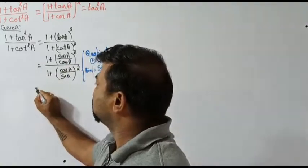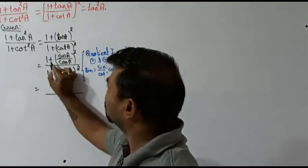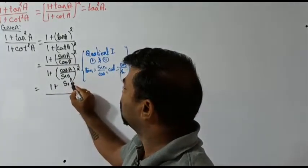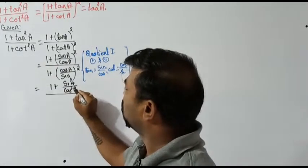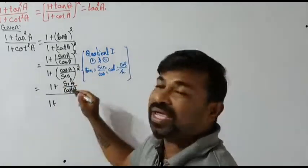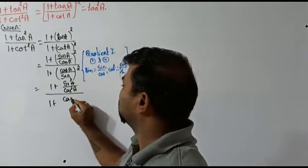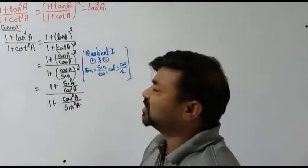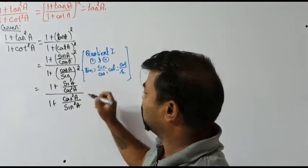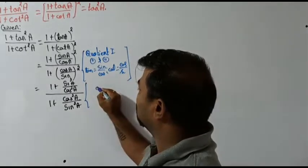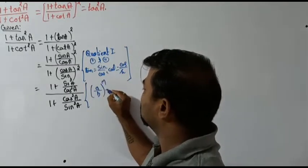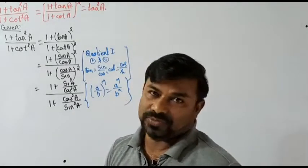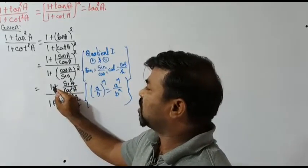Now let me push the square inside. Using the formula (a/b)^m = a^m / b^m, the numerator becomes one plus sine square a by cos square a, and the denominator becomes one plus cos square a by sine square a.